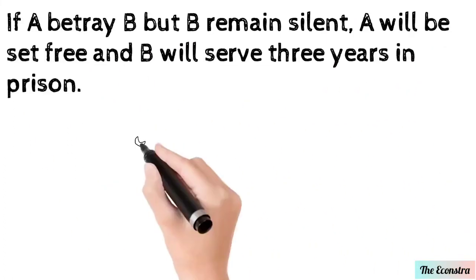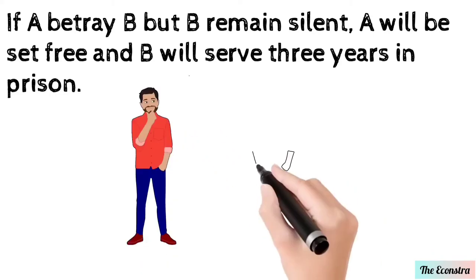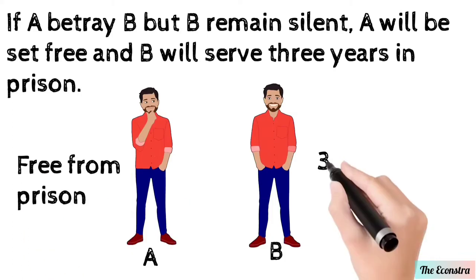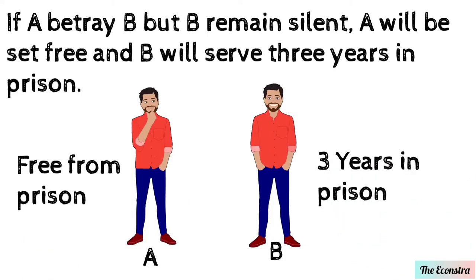If A betrays B but B remains silent, A will be free and B will serve three years in prison.